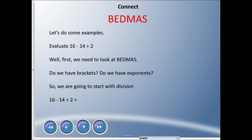Let's do some examples using BEDMAS — I'll keep it at the top to remind us of the order. Evaluate 16 − 14 ÷ 2. Looking at BEDMAS: any brackets? No. Any exponents? No. Any division? Yes. So we start with that. 14 ÷ 2 = 7. I'll rewrite: 16 − 7 = 9. It's good practice to show your work step by step so you don't lose track of all the operations. The answer is 9.